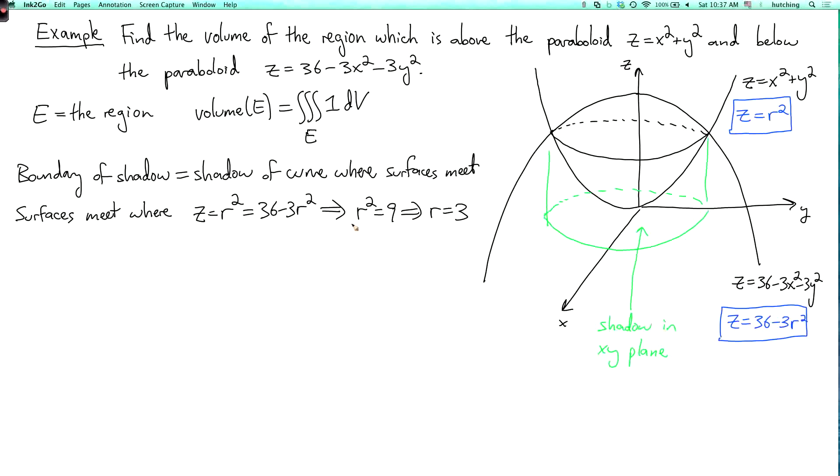I mean, we could also have r equals minus 3, but we can set up this integral without having to use negative values of r. So let's just take r equals 3. Okay, so the shadow in the xy plane, this is a disk of radius 3 centered at the origin.